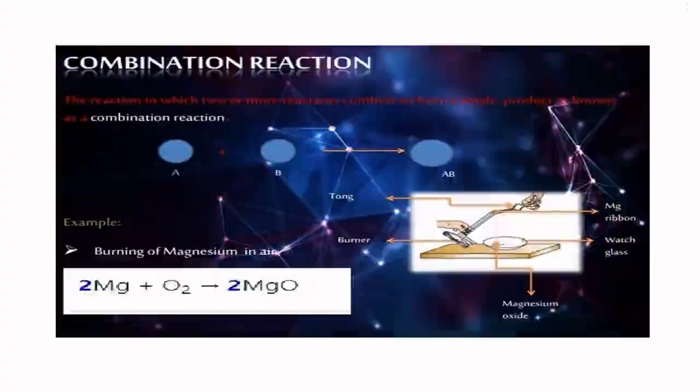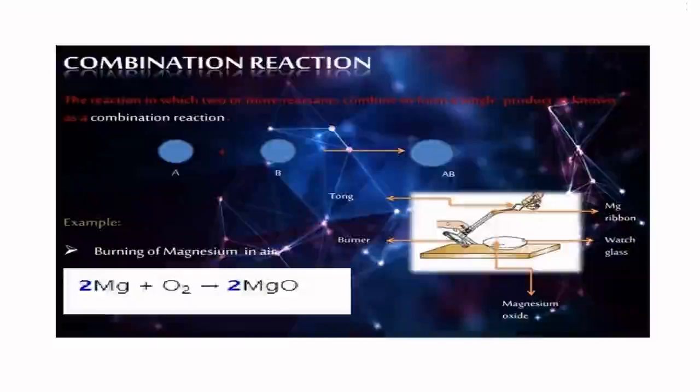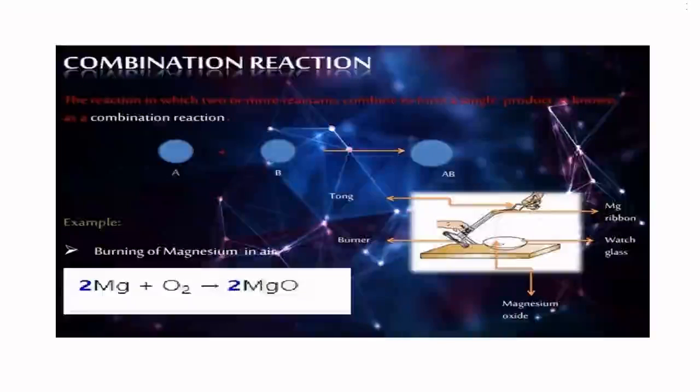Combination reaction: the reaction in which two or more reactants combine to form a single product, A + B gives AB. Example: burning of magnesium in air, 2Mg + O2 gives 2MgO, magnesium oxide.